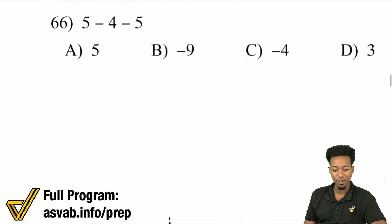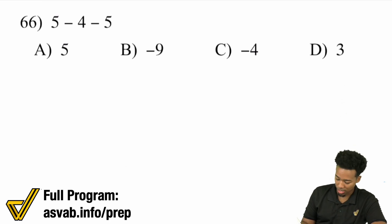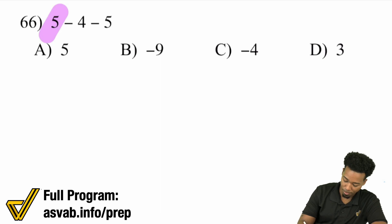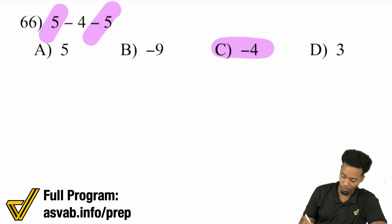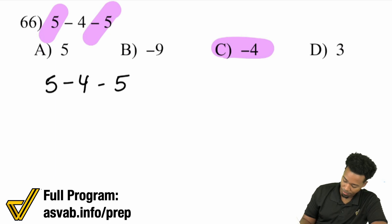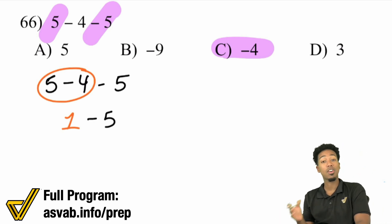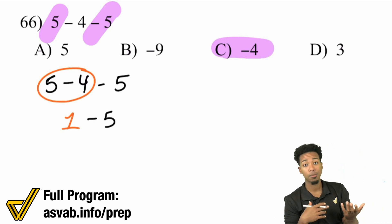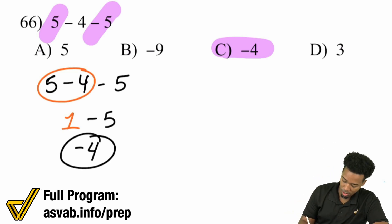Number 66: we have (5 minus 4) minus 5. I can tell immediately that 5 minus 5 is going to cancel out, leaving you with negative 4. But if we need to see it: 5 minus 4 is 1, and 1 minus 5 — remember it's the same thing as 5 minus 1, but just the negative version. 5 minus 1 is 4, but that'll be negative 4.